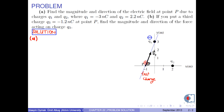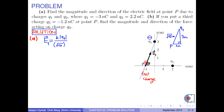The distance between charge q1 and point P is found by the Pythagorean theorem as square root of 10 meters. Therefore, the magnitude of E1 is k times the absolute value of q1 over the distance square root of 10 meters, squared.